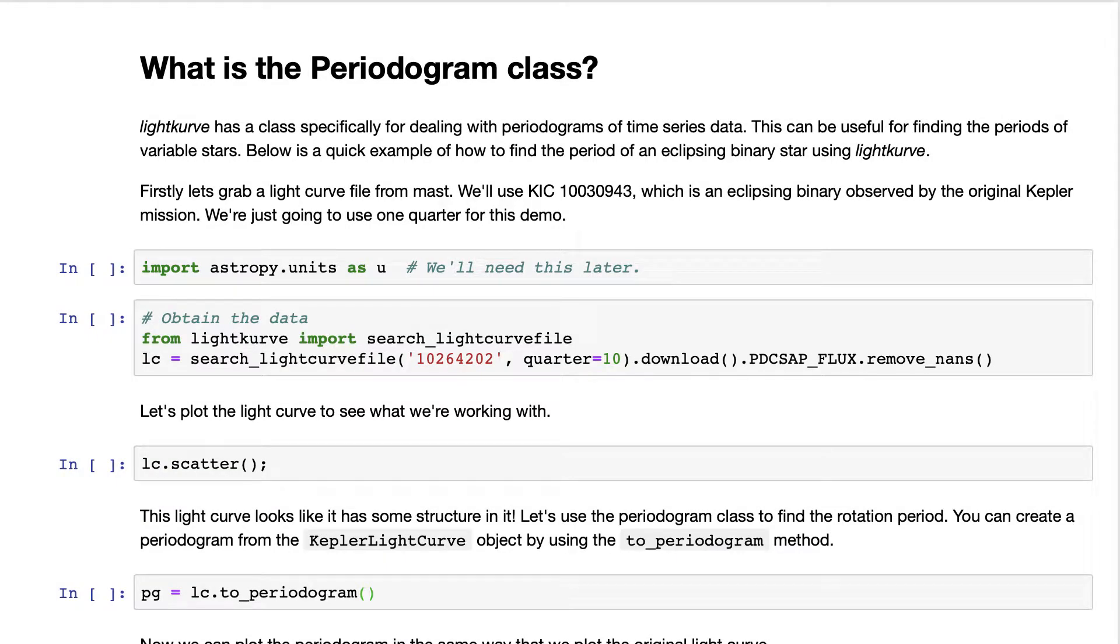LightCurve has a class specifically for dealing with periodograms of time series data. This can be useful for finding the periods of variable stars, for example.